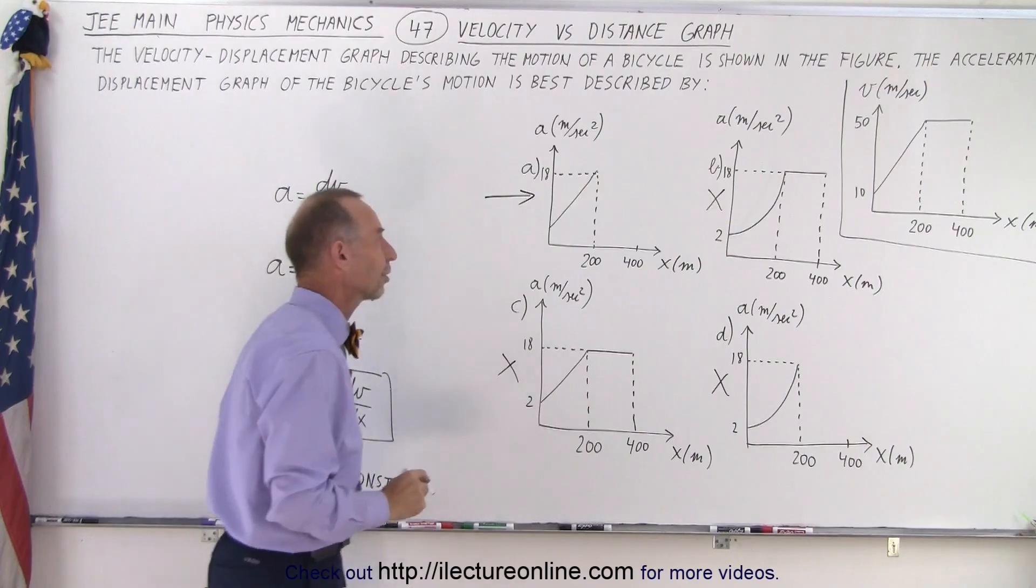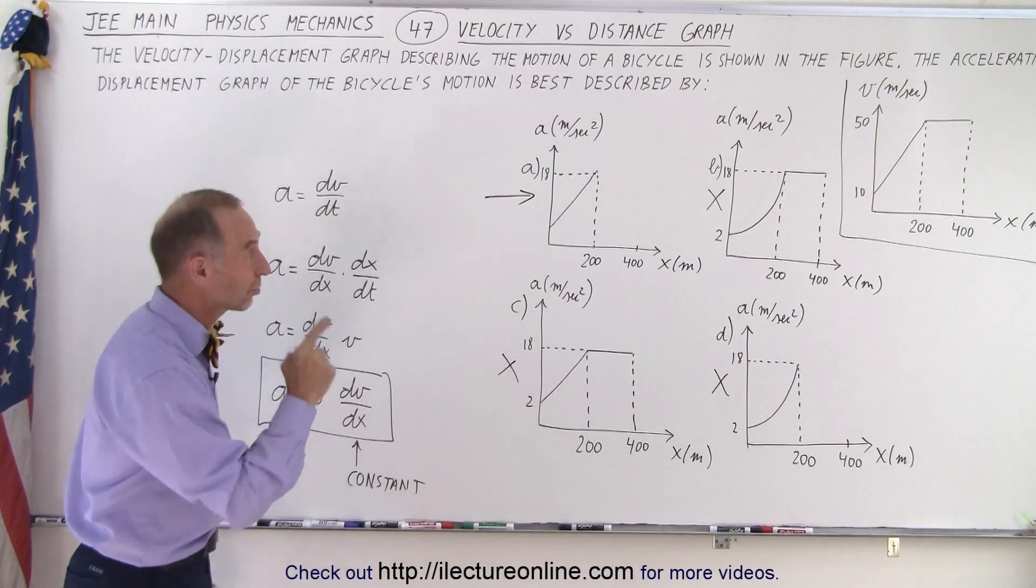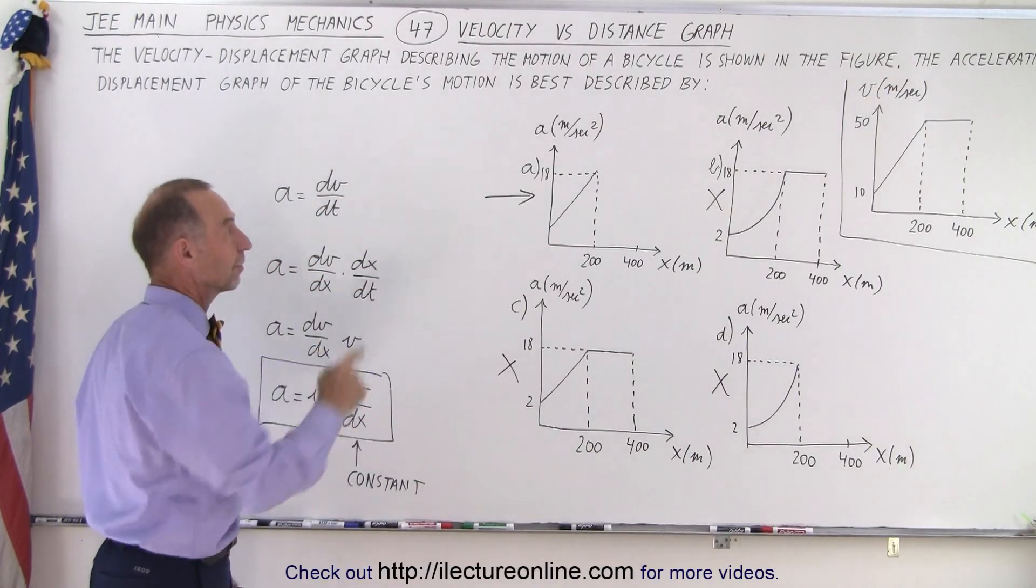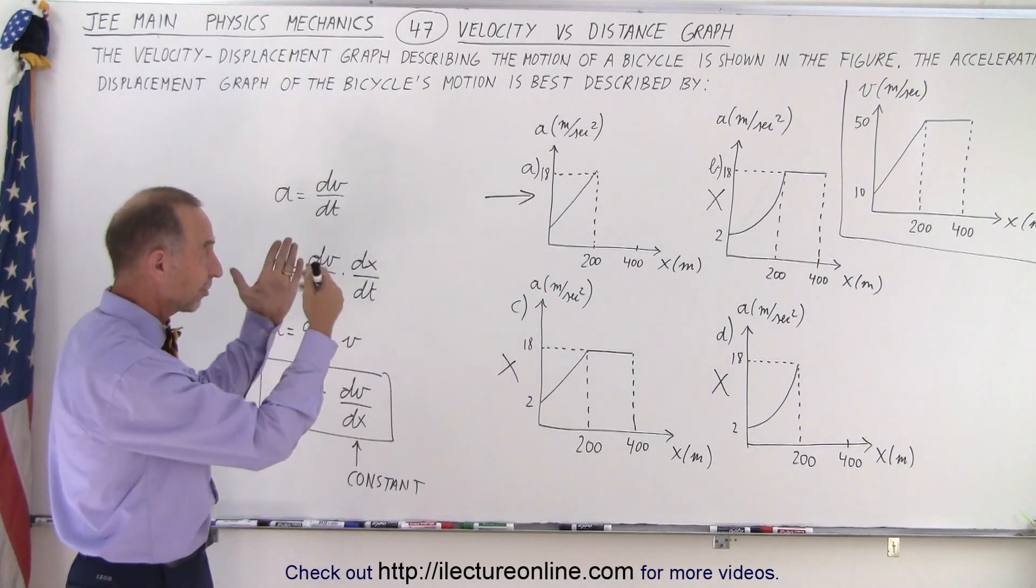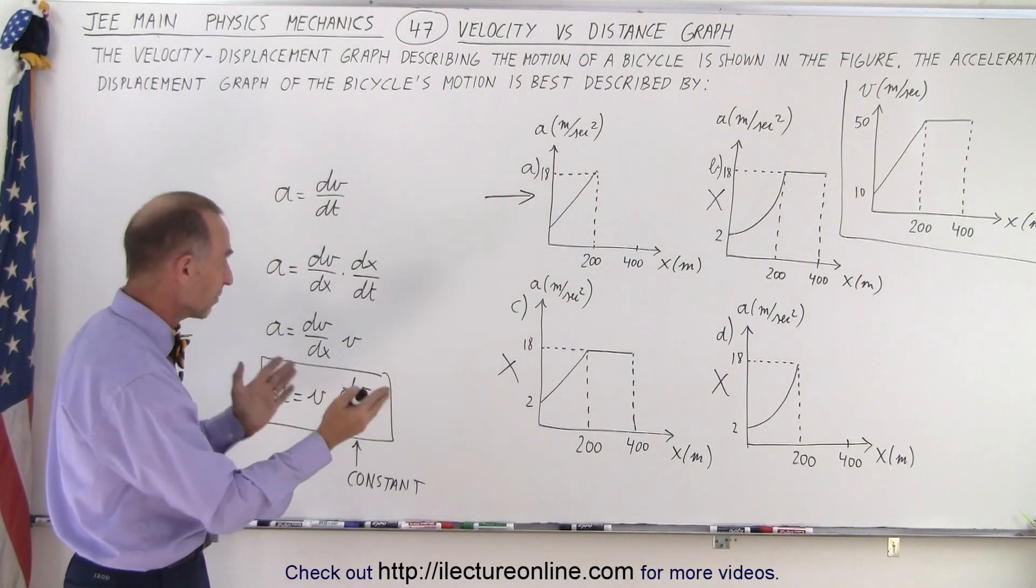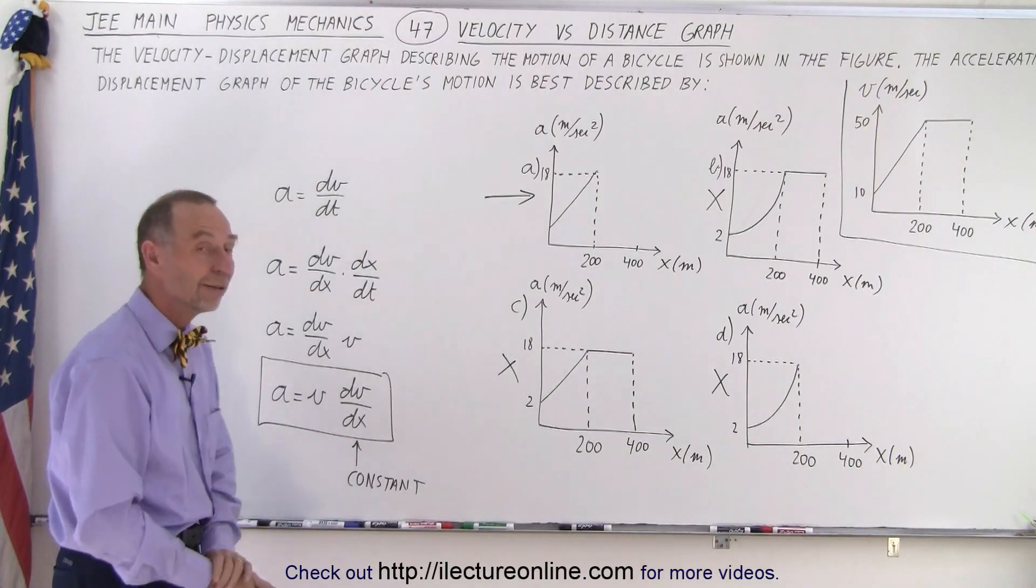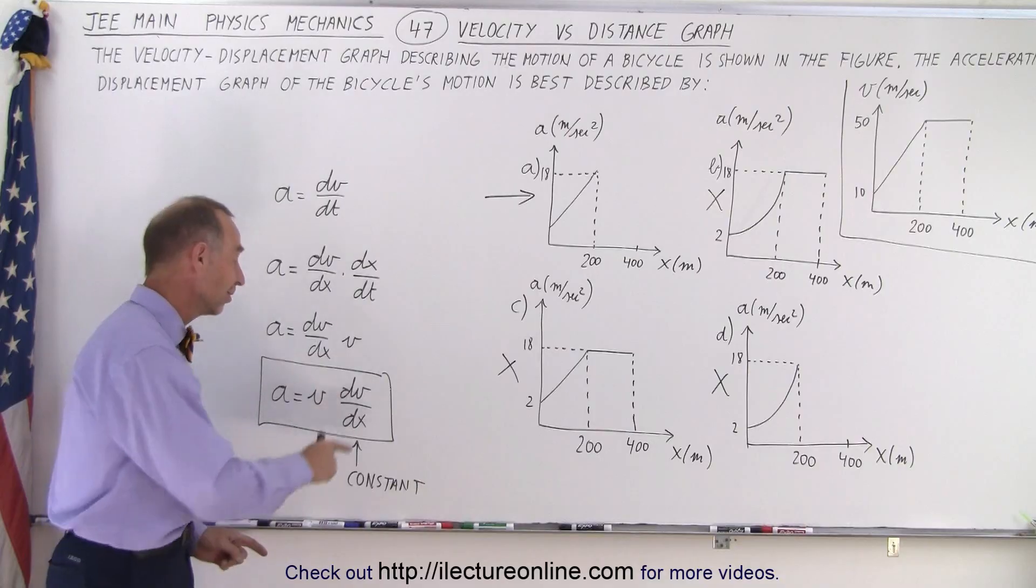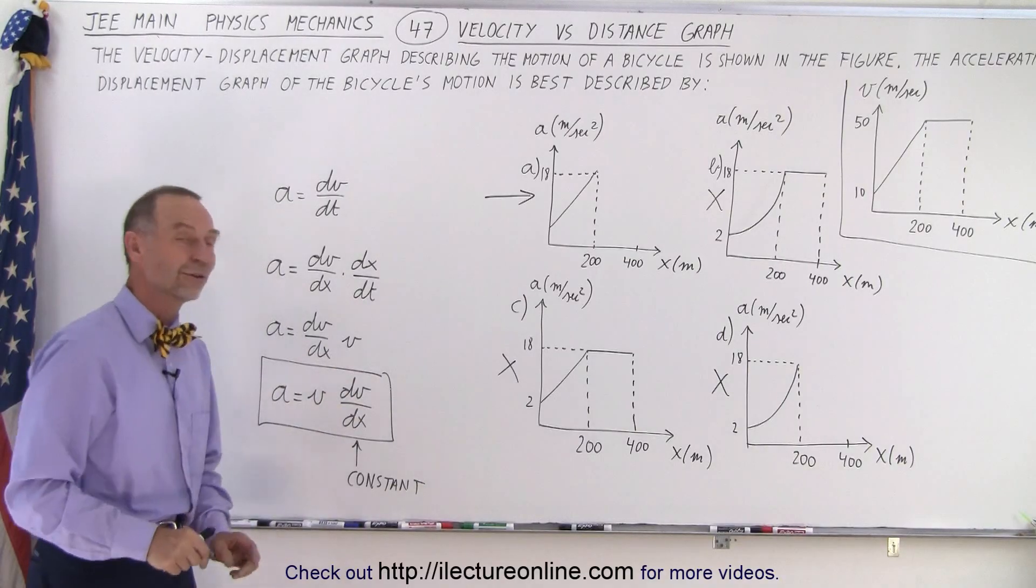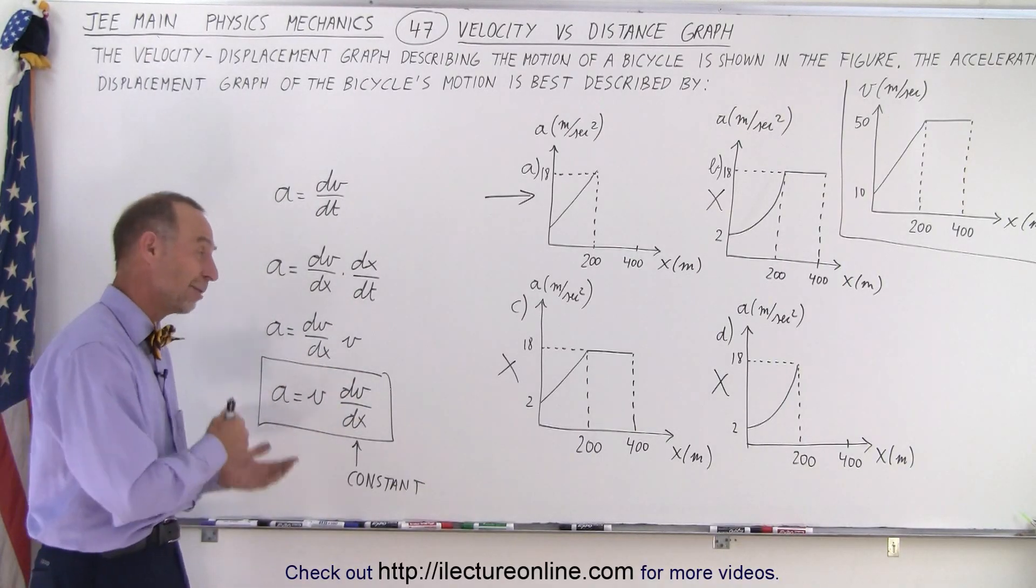So a must be the correct graph representing acceleration versus displacement of our velocity versus displacement graph. And so that's the solution. All the others do not match what we need to see based upon our analysis of the acceleration in terms of the change of velocity with respect to displacement. And that is how it's done.